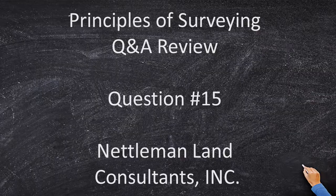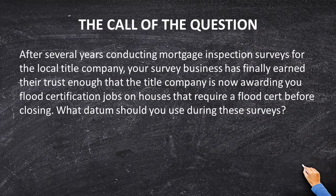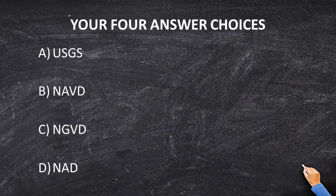Let's look at the call of the question. After several years conducting mortgage inspection surveys for a local title company, your survey business has finally earned the trust of that title company enough where they have awarded you a job to create flood certificates. The question here is: what datum should be used during the creation of these flood certificates? Our four answer choices are USGS, NAVD, NGVD, and NAD. Which of these four datums should be used as the vertical datum for your survey?